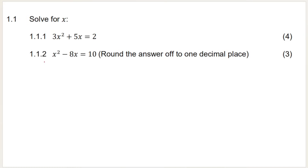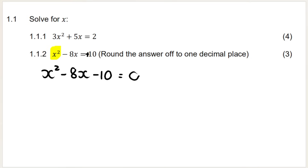My next question is also a solving question — we can see x squared once again, so we know it's a quadratic equation. My first step is to get the equation into standard form, making it equal to zero. The inverse operation of plus 10 is minus 10, so we make this equal to zero. When the question says round the answer to one decimal place or two decimal places or leave in surd form, this is a big hint that you're going to have to use the quadratic formula.